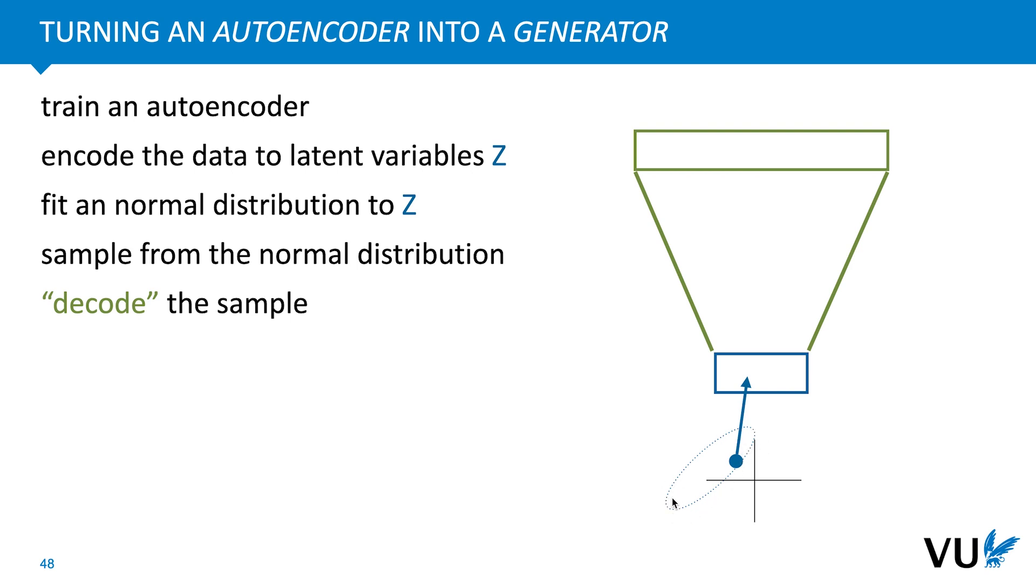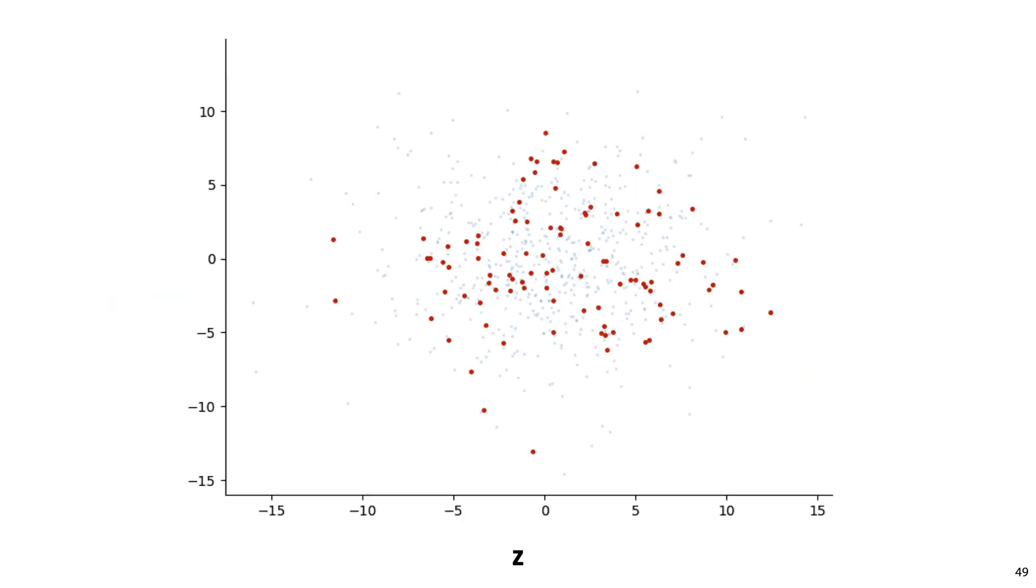With that, we can sample a point from this normal distribution, feed it through the decoder, and get a new data point that looks like it could have come from our data. This is a bit like the interpolation example. There we assumed that the points directly in between two latent representations should decode to realistic examples. Here we assume that all the points that are anywhere near points in our data, as captured by this normal distribution, decode to realistic examples. This is the point cloud of the latent representations of our example, in light blue. We plot the first two dimensions of the 256 dimensions of our latent space. To these points, we fit a multivariate normal distribution in 256 dimensions, and we sample 400 new points, shown here in red. In short, we sample points in the latent space that do not correspond to the data, but that are sufficiently near the data that we can expect the decoder to give us something realistic.